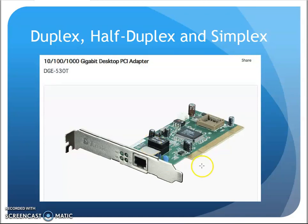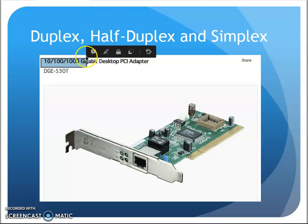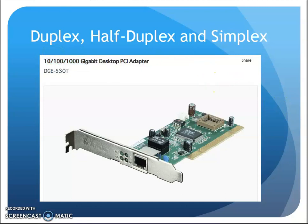If I look at a network card — one that would be snapped into a desktop computer — a lot of times we'll see the notation 10/100/1000. That lets you know it's capable of a 10 meg, 100 meg, or 1000 meg connection. The slashes indicate it will auto-negotiate with whatever switch it's plugged into, and use that speed.